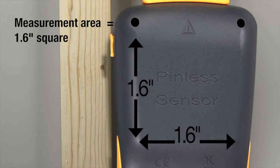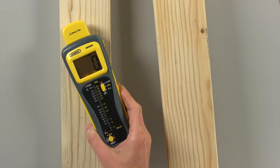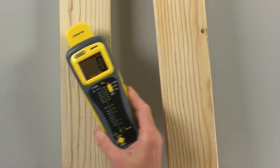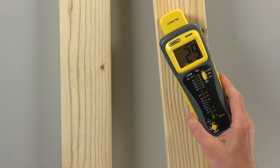Measurement area must be at least the size of the inductive sensor. Wood readings are affected by ambient humidity and the wood's density. You'll see what's typical for your wood in your environment.